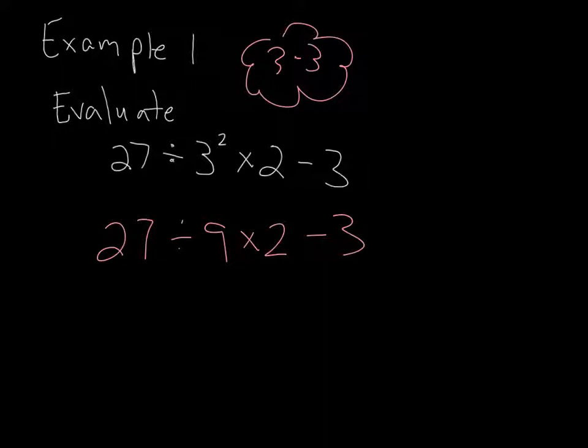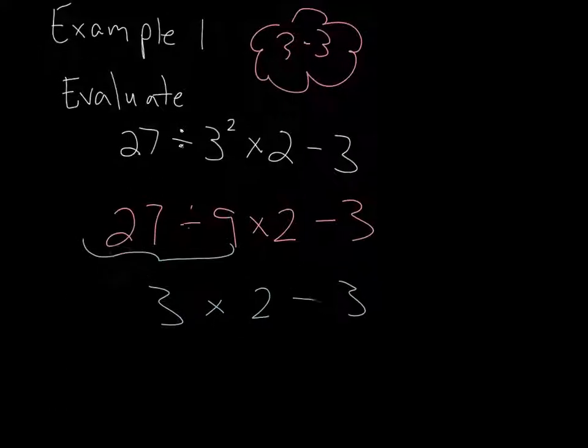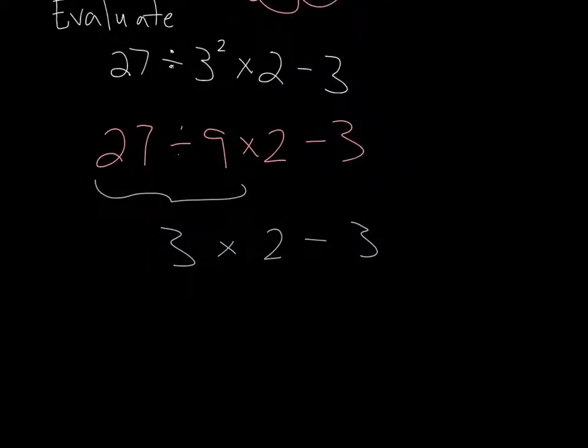There's no more exponents, so now we move to division and multiplication, multiplication and division in order from left to right. So do we have multiplication? Yes. Do we have division? Yes. As we move from the left over here through the problem, which one of those comes first? It's the division. So we're going to do 27 divided by nine, which is three. And then we still have the times two minus three. We haven't done anything with that part of the problem. Now, we have what operations do we have now? We have multiplication and we have subtraction. What has to be done first? The multiplication. So we do three times two, which is six. We have minus three. Six minus three is three. There's our simplified answer.